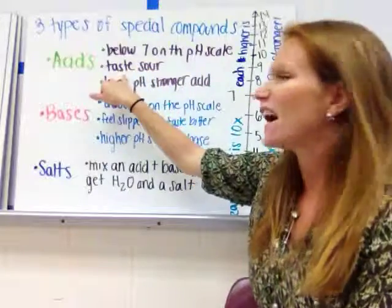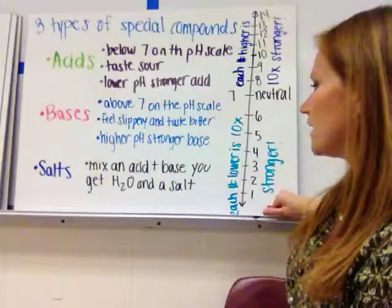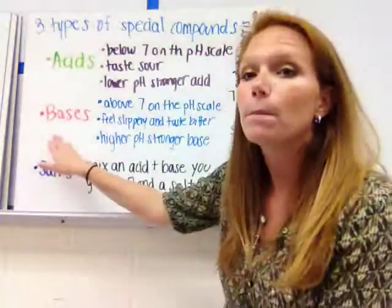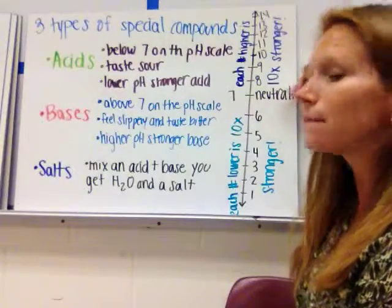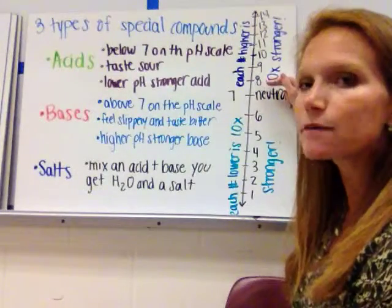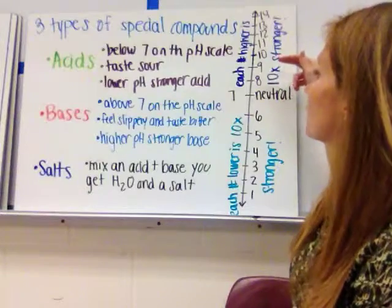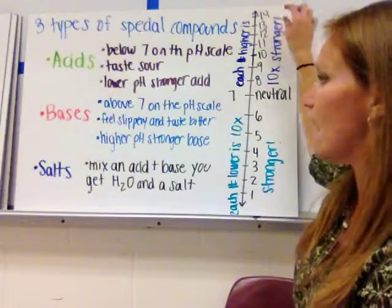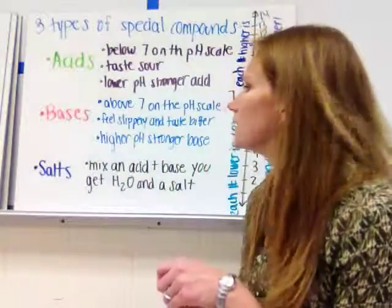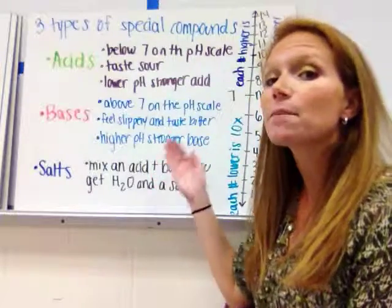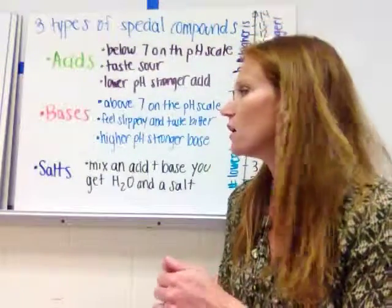Bases are on the opposite end of the pH scale — anything above seven. The same tenfold rule applies: pH 8 is ten times more basic than 7, pH 9 is one hundred times more basic, pH 10 is one thousand times more basic. Bases feel slippery to the touch; many soaps and cleaners are bases. The higher the pH, the stronger the base.